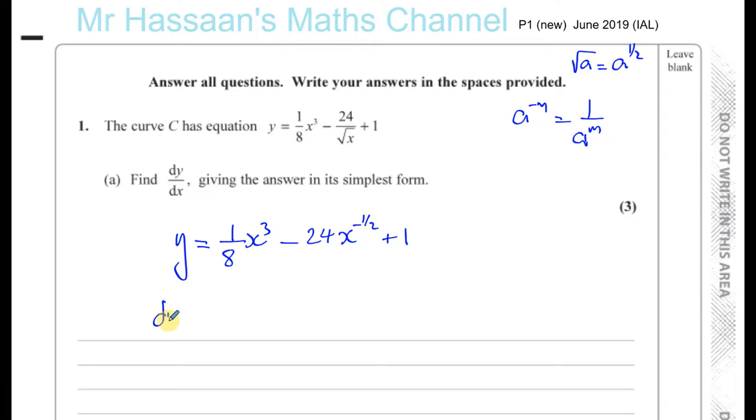So dy/dx, differentiate with respect to x, you multiply by the power. So that becomes 3/8 and you take 1 from the power, so it becomes x². And here you multiply by the power. So minus a half times minus 24 is plus 12. And you take 1 from the power, so it becomes x to the power of negative 3/2. Minus a half and minus 1 is like minus a half minus 2/2, which is minus 3/2.